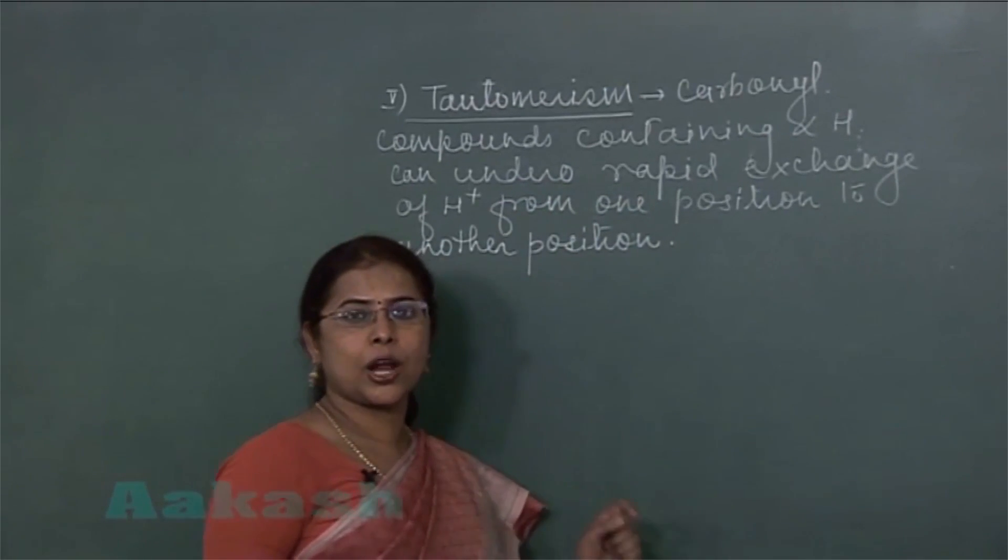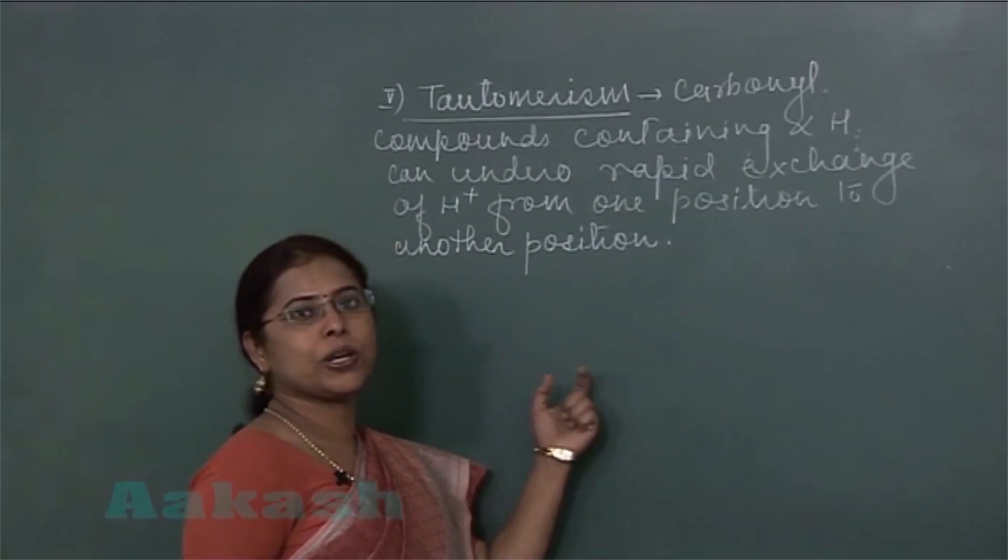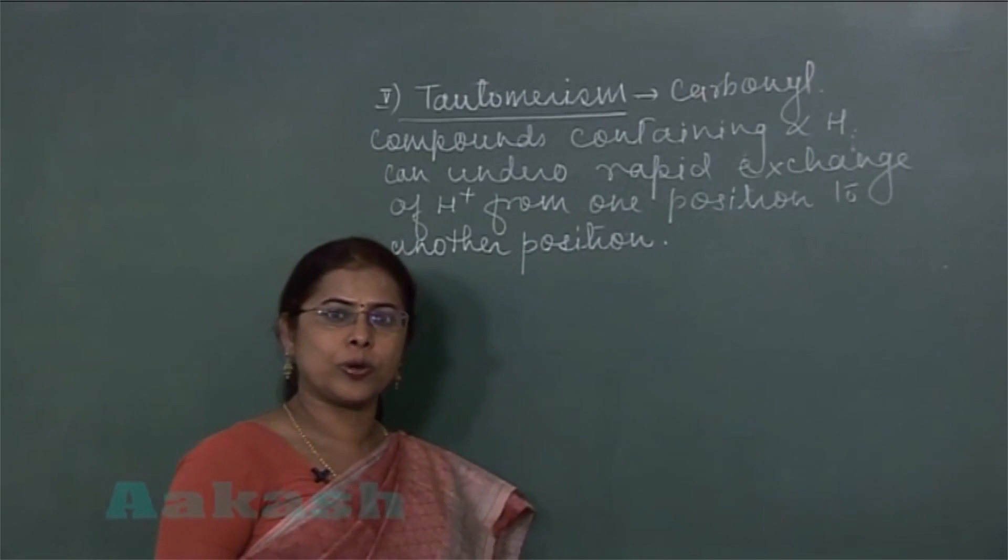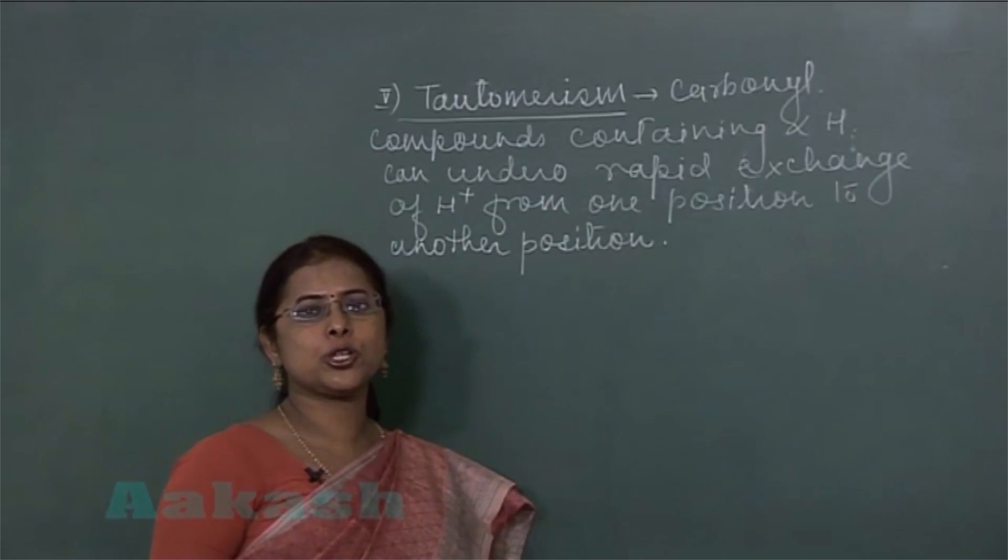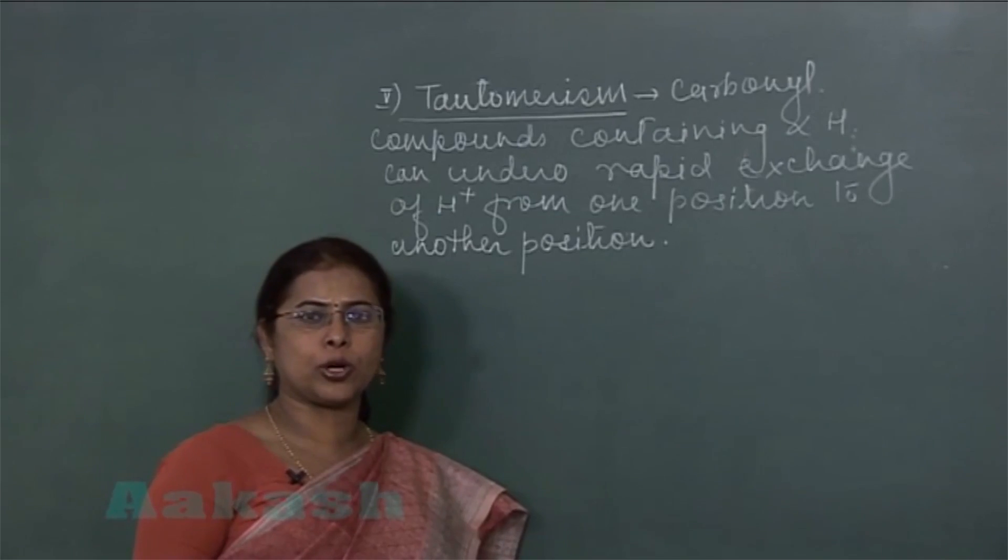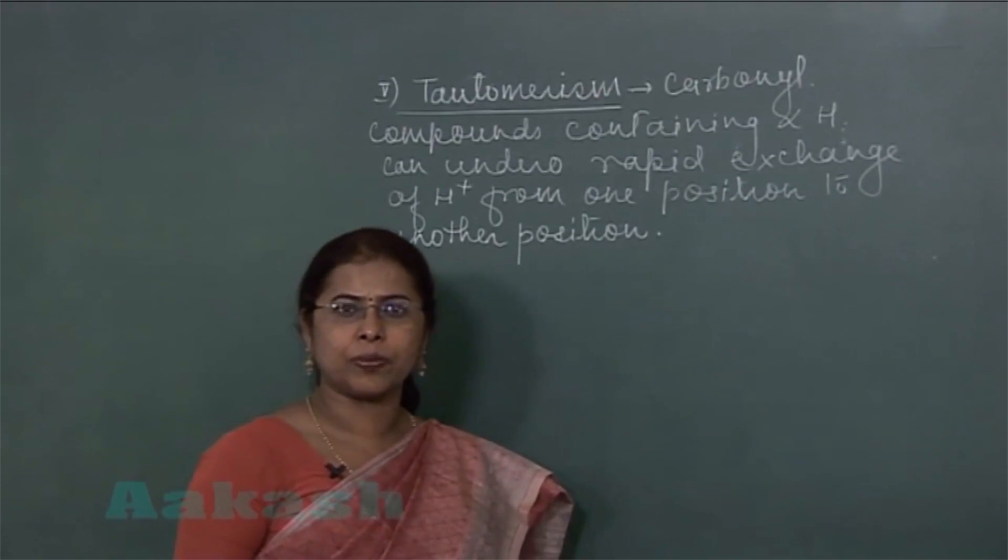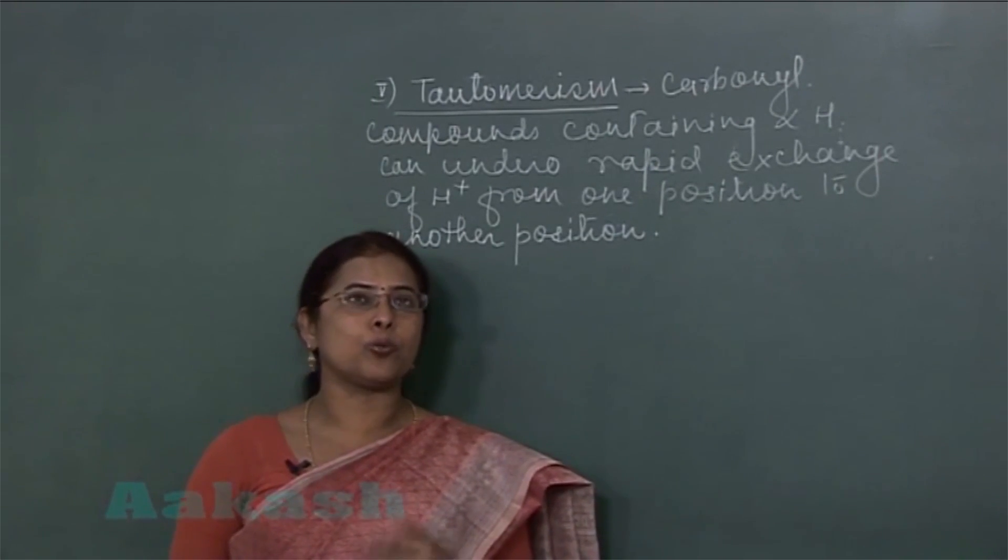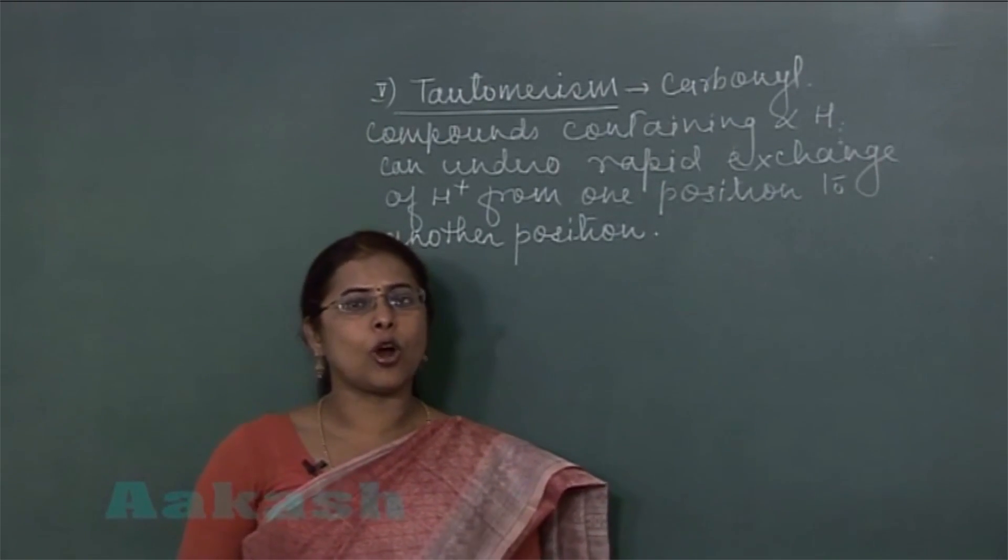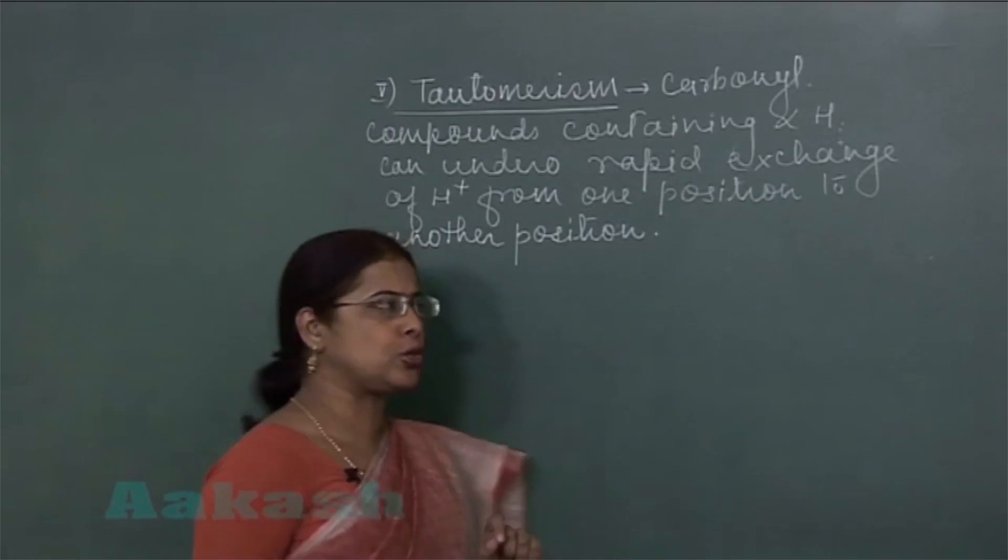These isomers are called tautomers and the phenomenon is known as tautomerism. Tautomerism is shown by only those carbonyl compounds which have alpha hydrogen atoms, and different isomers are formed due to migration of proton from one position to another position.